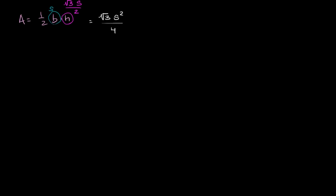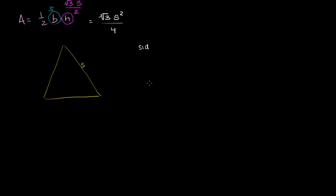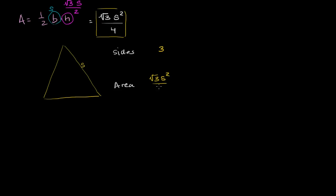So let's start with a clean equilateral triangle. We're going to assume that each of the sides has length s. I'm going to keep track of two things: the number of sides as the triangle turns into a snowflake, and the area after each pass of adding smaller triangles. Right when we start, we have three sides, and our area — as we figured out in a previous video — is √3·s²/4.